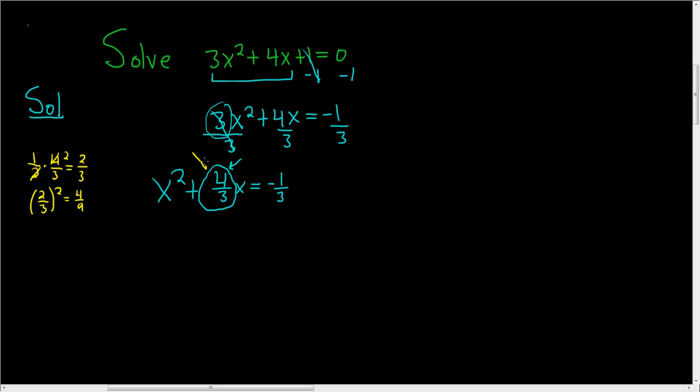Again, you take this number, divide it by 2 or multiply it by 1 half, and then you square it. Then you take the 4 ninths and add it to both sides. So plus 4 ninths, plus 4 ninths.